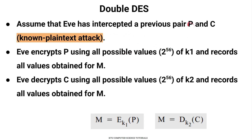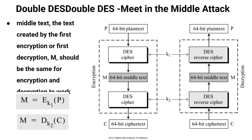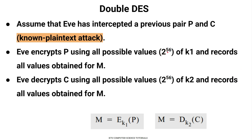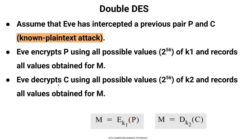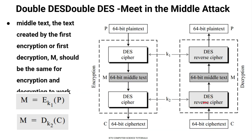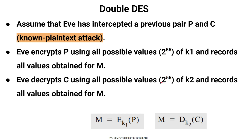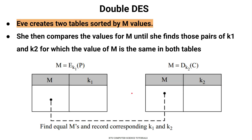The attacker has intercepted a pair of plaintext P and ciphertext C. The plain text is known. For the first key, we try all possible values — that is 2 raised to 56 possible values. We record all values in a table. Then we take the ciphertext C and decrypt it using all possible values of K2, recording the corresponding middle text values in a second table. We then compare the two tables.